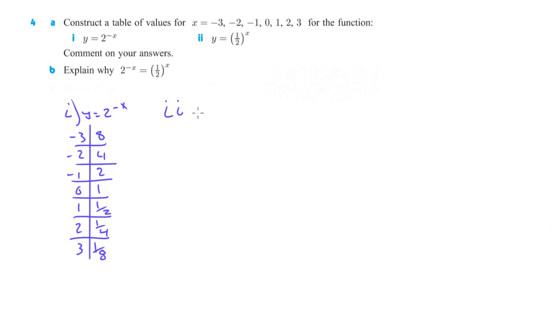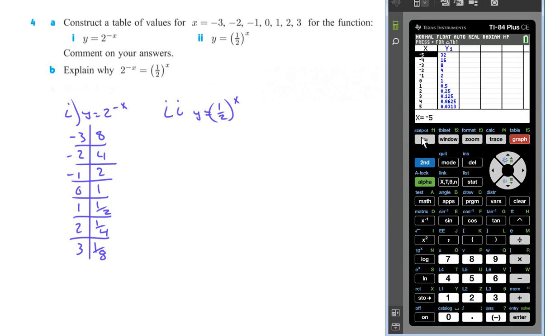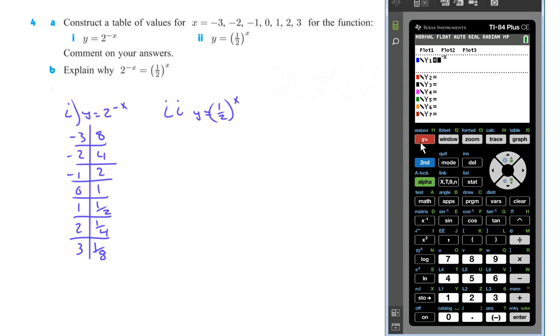So for part ii here, we've got y equals one half to the x. So we'll put that into y as well. I'd like to take a look at this after we're all done. So I'm going to actually just go and turn this graph off. And now we have parentheses one divided by 2 all to the x power. So now it's just going to only graph this one here. This graph looks pretty similar to the other one. We're actually more interested in the table.